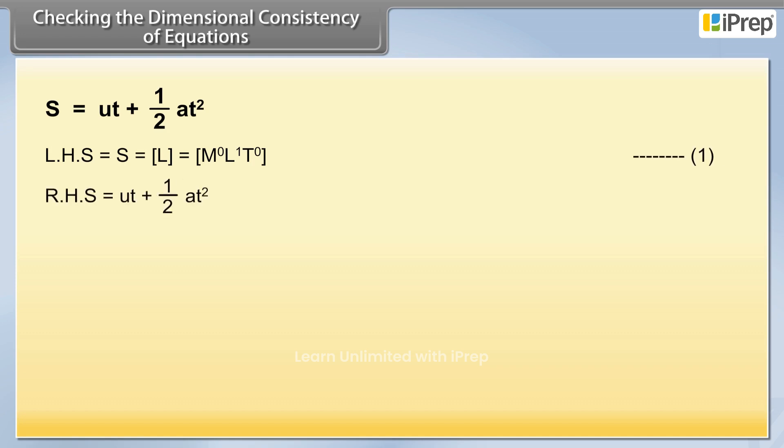Right hand side is equal to ut + ½at², which can be written as ut + at², as ½ has no dimensions.